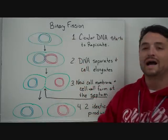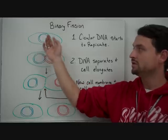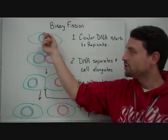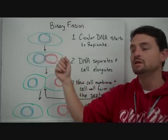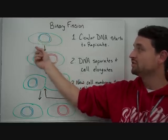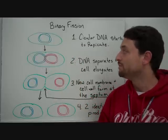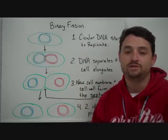They do binary fission. They don't have a nucleus. They have a circular DNA — it is double-stranded. And it's just the cell membrane that's surrounding them. Really about the only other thing they would have in there would be ribosomes.